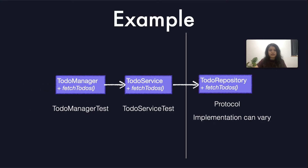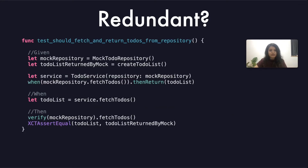One of the major indicators of fragile tests is tight coupling between production code and test code. The argument is that even if test code and production code describe the same behavior, the structure shouldn't necessarily be the same. For example, to-do manager has a to-do service, and to-do service has a to-do repository. To fetch to-dos, the call flows from manager to service to repository. The test verifies that fetch to-dos is called on the repository when called on the service — this kind of test only improves coverage and is a classic case of redundant test.